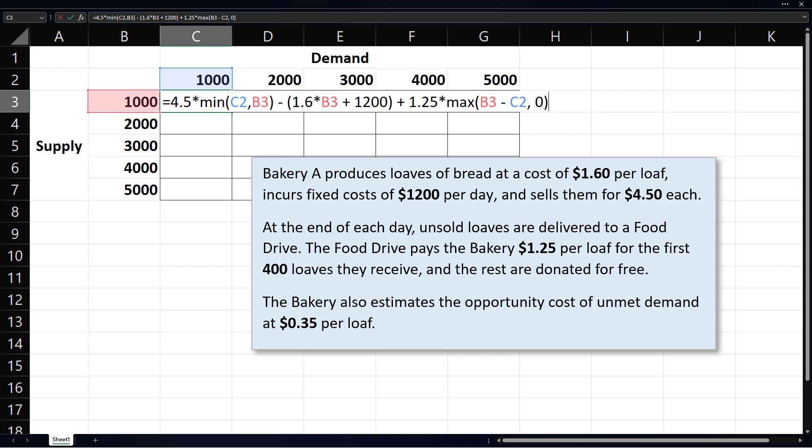Note however that the food drive only pays for the first 400 loaves. That is, if more than 400 loaves are delivered to the food drive, the bakery will only be paid for 400 units. We should therefore specify that the bakery will be paid the minimum of the excess and 400 units.